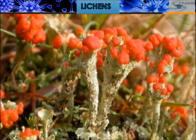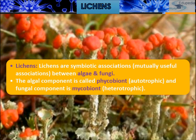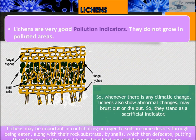Lichens are symbiotic associations — mutually useful associations between algae and fungi, providing benefits to both. The algal component is called the phycobiont, which is autotrophic, and the fungal component is known as the mycobiont, which is heterotrophic. Lichens are very good pollution indicators — they do not grow in polluted areas.